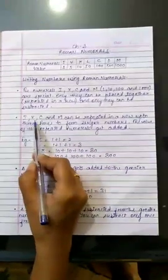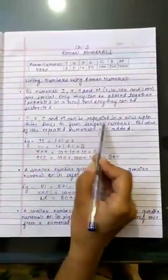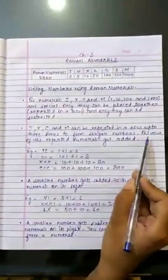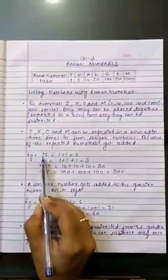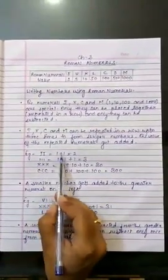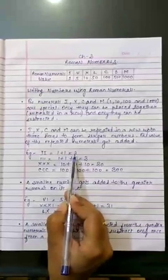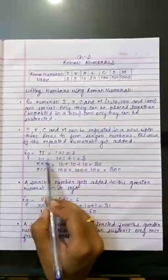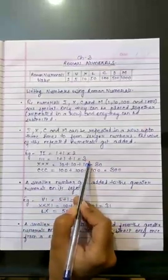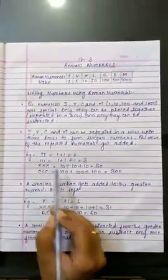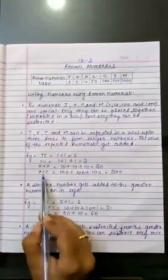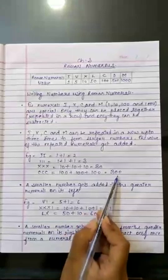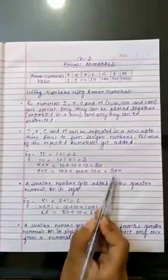Rule 2: I, X, C and M can be repeated in a row up to 3 times to form larger numbers. The value of repeated numerals gets added. For example, II equals 1 plus 1 is 2. III equals 1 plus 1 plus 1 equals to 3. XXX equals 10 plus 10 plus 10, the answer comes 30. CCC equals 100 plus 100 plus 100 equals to 300.